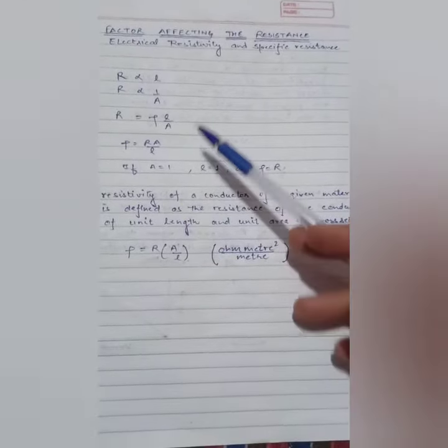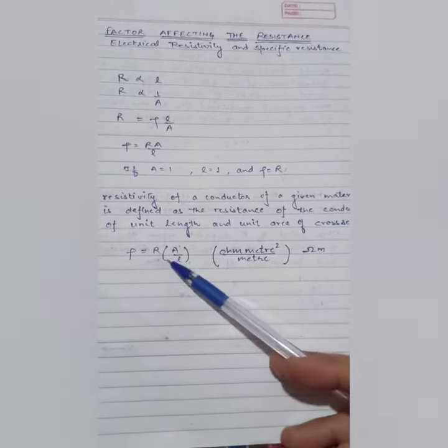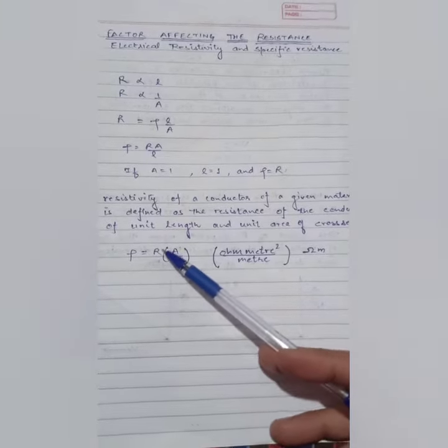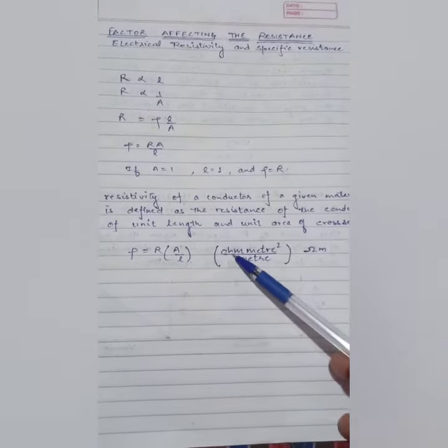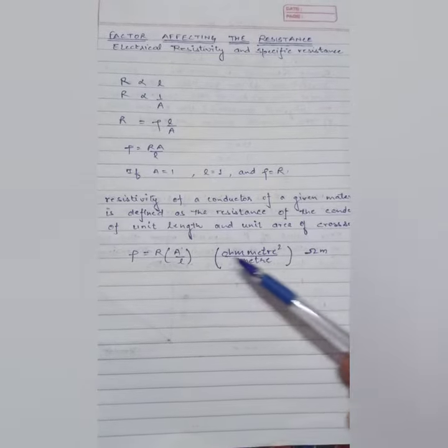R equals rho L upon A, rho equals R A upon L. Unit of R is ohm, unit of area is meter square, and unit of length is meter.